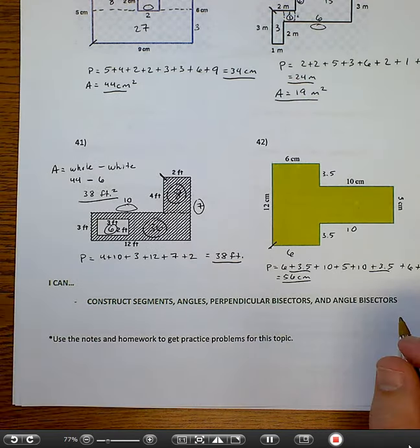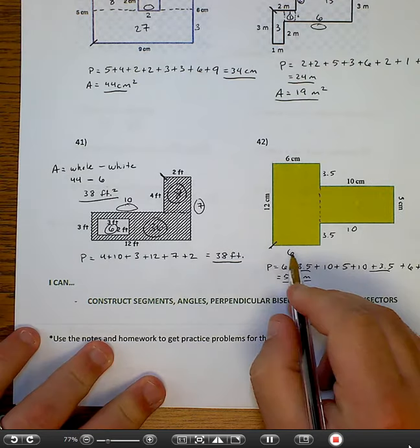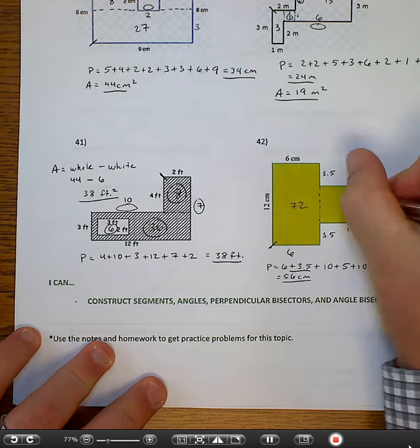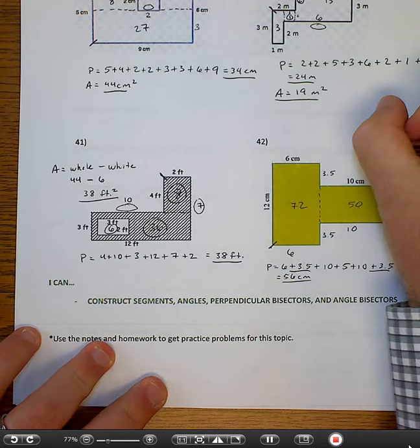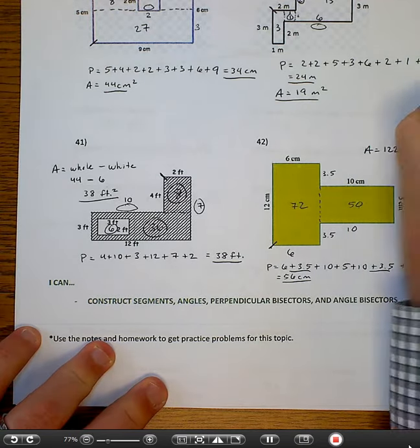Area, I'm going to cut it right here. 6 by 12 is 72. 5 by 10 is 50. Add those up. You get 122 centimeters squared is your area.